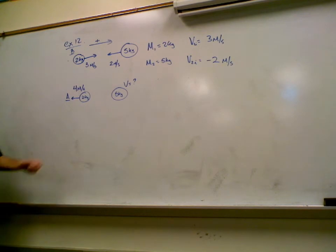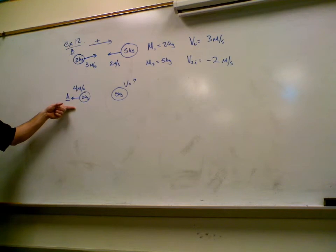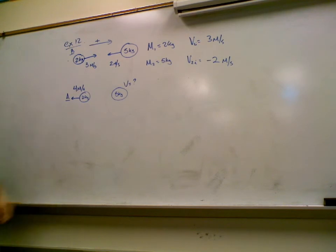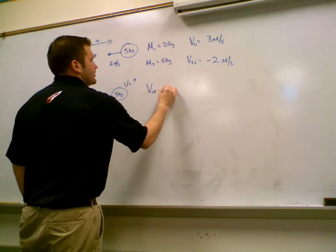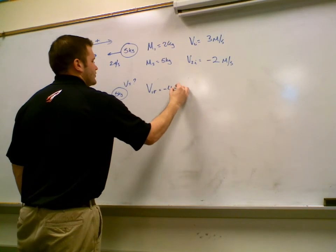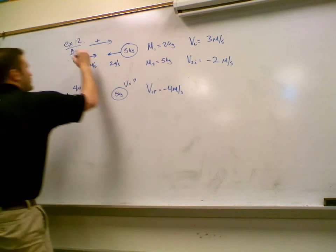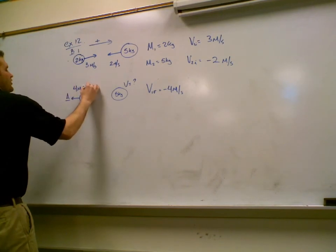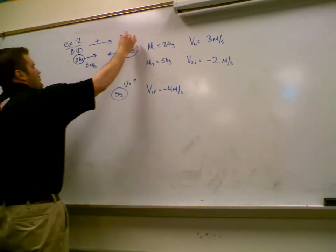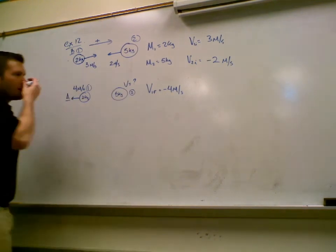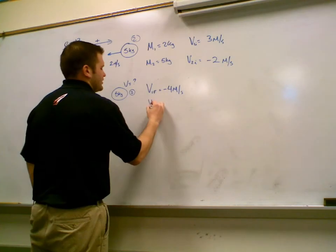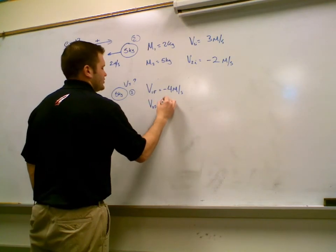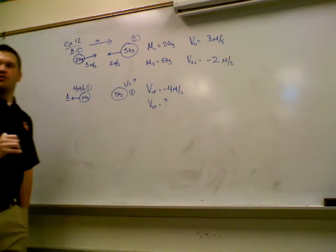Okay, after the collision, what happens to the 2kg ball's velocity? It becomes negative 4. So V1 final is negative 4. And just to clear this up, I'm calling the 2kg ball object 1 and the 5kg ball object 2. And we want to find the final velocity for object 2. Does that make sense?